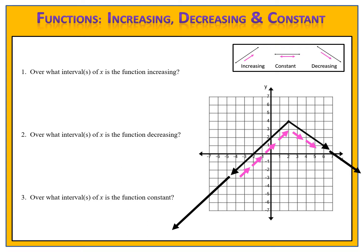So the interval of increase is actually much larger than it first appeared, and the interval of decrease is also much larger than it first appeared. When you have arrows on the ends of your graph, the first thing you want to do is go to your x-axis, put a negative infinity on the left-hand side, and a positive infinity on the right-hand side. Those will be very important in a few moments.